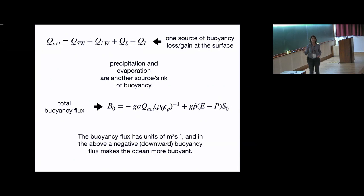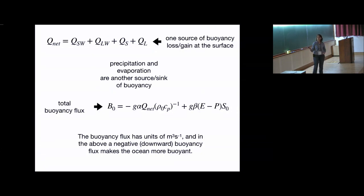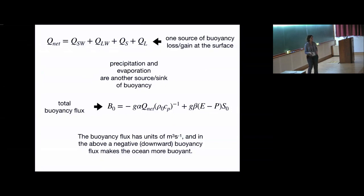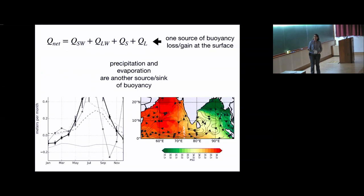That's what's happening with surface heat flux, which influences upper ocean temperature. Ocean density depends not just on temperature but also on salinity. The total buoyancy flux can be written as gravitational acceleration times thermal expansion times Q-net over rho-cp, plus a freshwater piece involving evaporation minus precipitation. If precipitation exceeds evaporation, that's a negative number and buoyancy increases in the ocean.